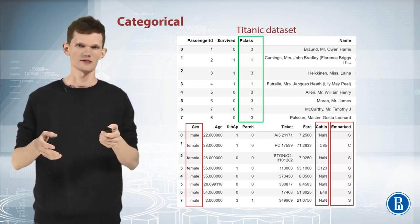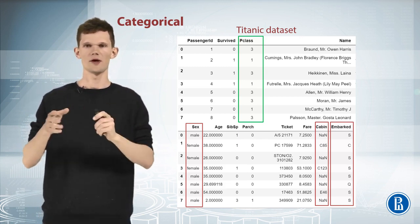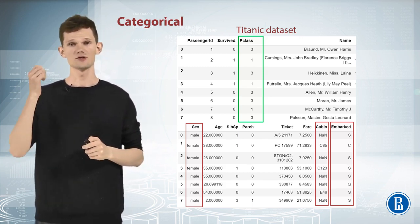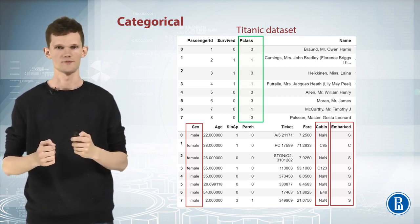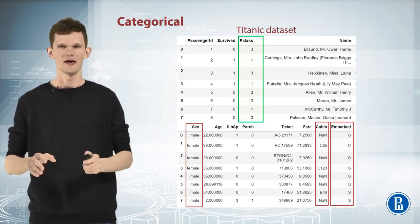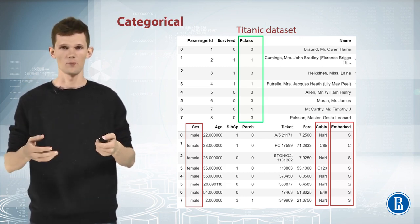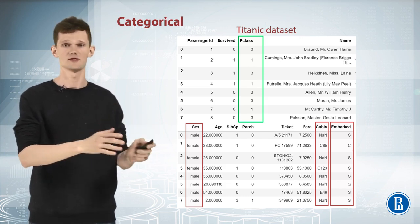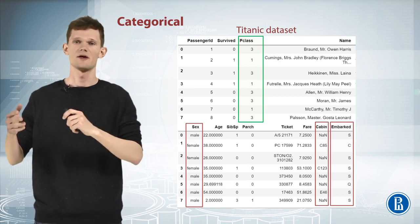P-Class stands for Ticket Class and has three unique values 1, 2 and 3. It is ordinal or, in other words, ordered categorical feature. This basically means that it is ordered in some meaningful way. For example, if the first class was more expensive than the second,